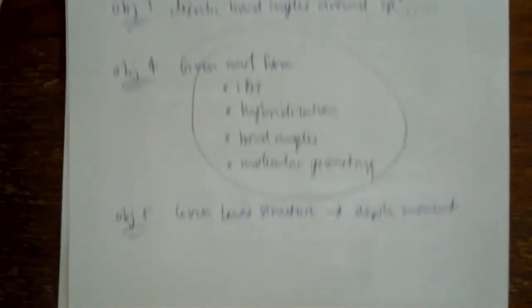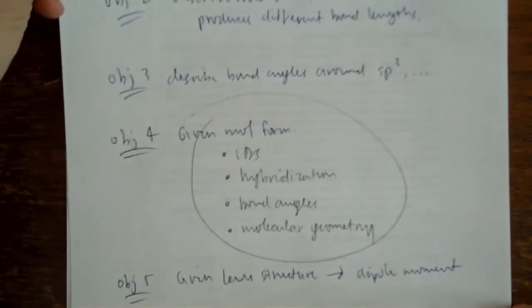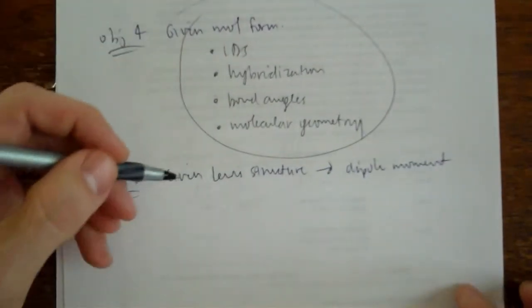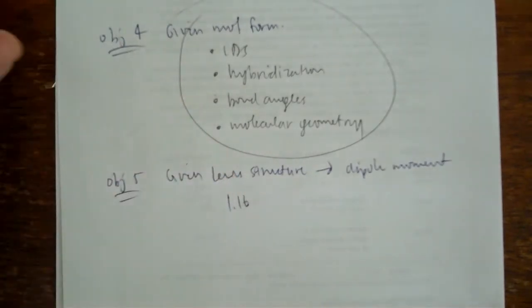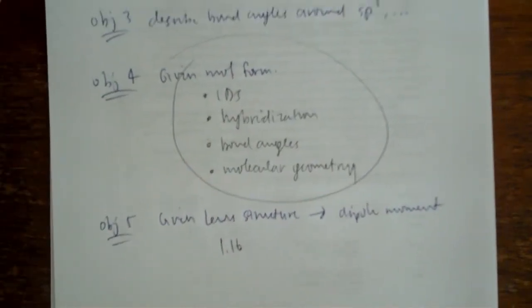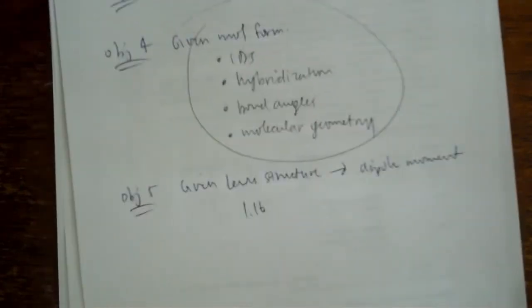And then finally, given the Lewis structure, predict the dipole moment. I think I'm going to leave that for class. Actually, you know, you can do that without me. I think it's section 1.16 in Bruce. And it's, in my opinion, it's much better to get that via the textbook than from a lecture anyway. Okay? Good luck.